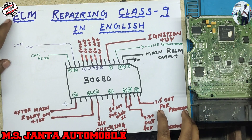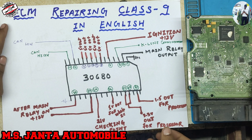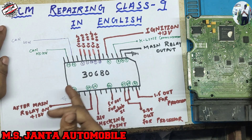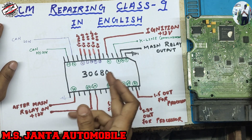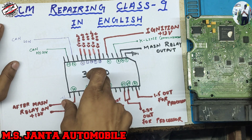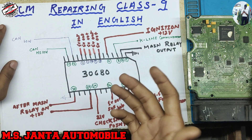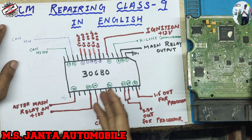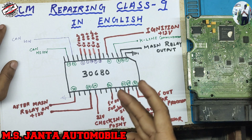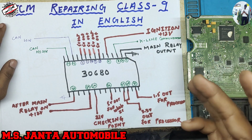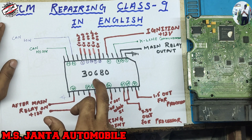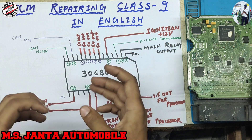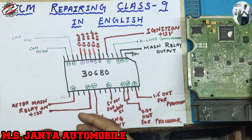So let's start our topic. This is ECM repairing class 9 in English. In this video we will discuss about all power ICs. This IC is used in many Bosch ECMs like BMW, Audi, Mercedes, Jaguar, and many others. I have also seen Kiran ECM using this IC. We will discuss in detail how the main relay voltage comes, travels, and works, and how many transistors are used.